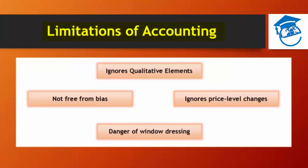The second limitation is that accounting is not free from bias. In many situations, accountants have to make choices between various alternatives — for example, the method of depreciation, whether to use the straight-line method or the written-down value method, or the method of inventory valuation, whether to use LIFO or FIFO. Since subjectivity is inherent in personal judgment, financial statements are therefore not free from bias.